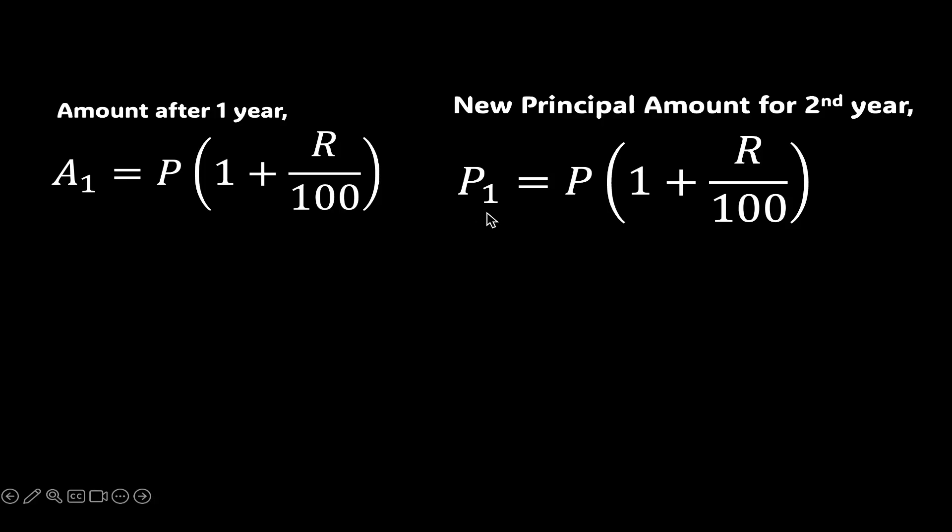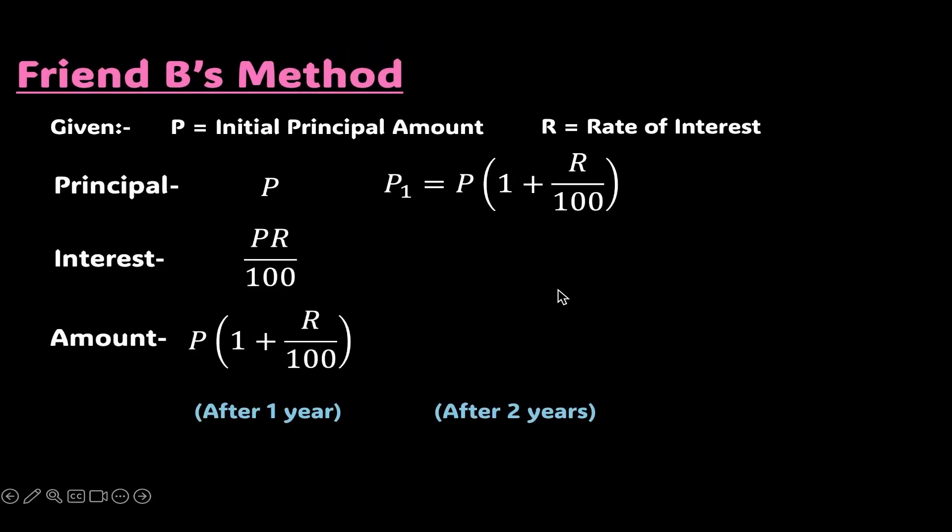So the principal amount after one year, call it P1, will be P times 1 plus R over 100. Let us go back to the same format as friend A in order to compare and understand the difference. I would like you to pay close attention to the principal row because that's where all the magic is happening.